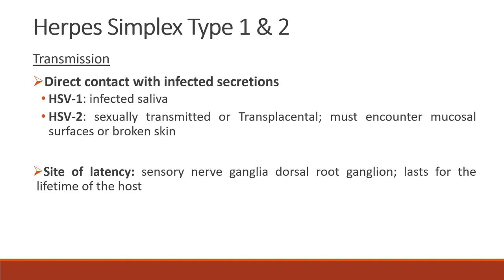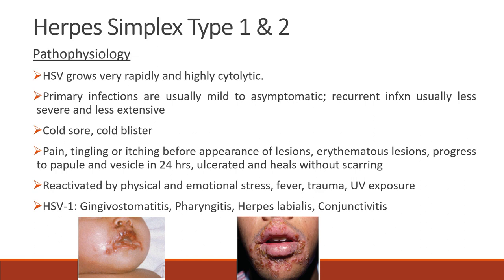For herpes simplex virus type 1 and 2: transmission is through direct contact with infected secretions — infected saliva for HSV-1, and sexually or transplacentally for HSV-2 — and must encounter mucosal surfaces or broken skin. The site of latency is the sensory nerve ganglia and dorsal root ganglion, lasting the lifetime of the host. For pathophysiology, HSV grows very rapidly and is highly cytolytic. Primary infections are usually mild to asymptomatic; recurrent infections are usually less severe and less extensive. The patient experiences cold sores and cold blisters, pain, tingling or itching before lesion appearance, and erythematous lesions.